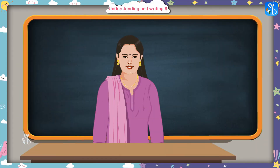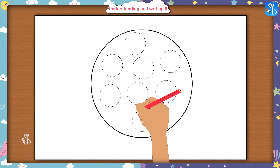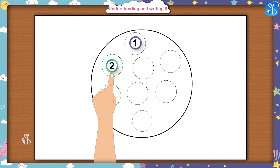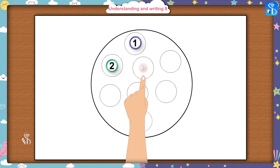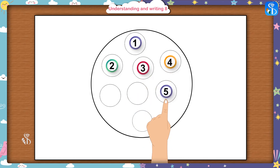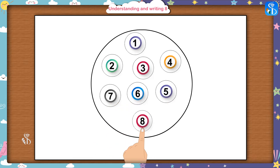Now you have to draw a picture, children. Draw 8 beads in this circle. 1, 2, 3, 4, 5, 6, 7, 8. Well done.